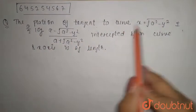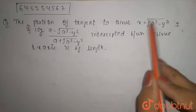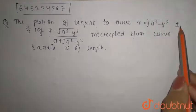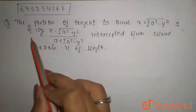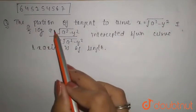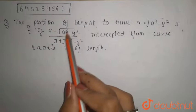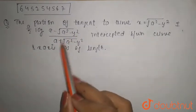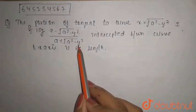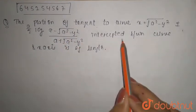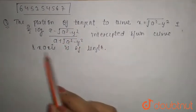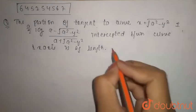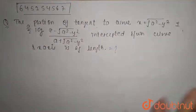...portion of tangent to the curve x equals root of (a² - y²) plus a/2 times log of (a minus root of (a² - y²)) divided by (a plus root of (a² - y²)), intercepted between the curve and the x-axis, is of what length? So we need to find the length.